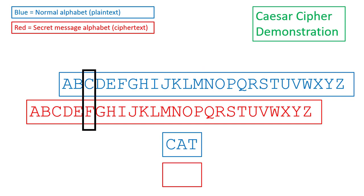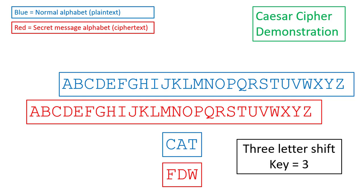So this time, the letter c will be replaced with the letter f, the letter a will be replaced with the letter d, and the letter t will be replaced with the letter w. Because we shifted the alphabet three characters, our new key is three.